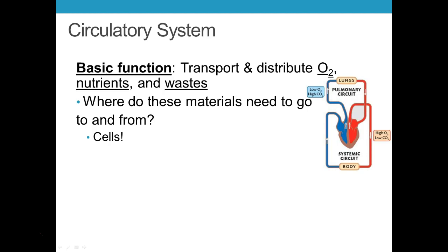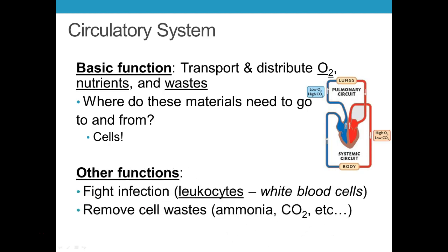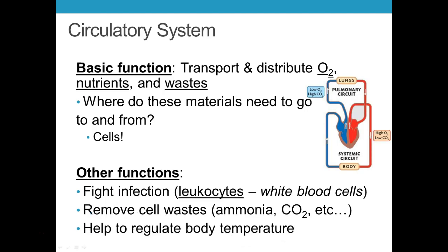Literally every single cell in your body has a blood vessel close by it. It does other things as well — you've got white blood cells in your blood that fight infections, it removes waste and CO2, and we've talked about how it delivers ammonia to the liver.